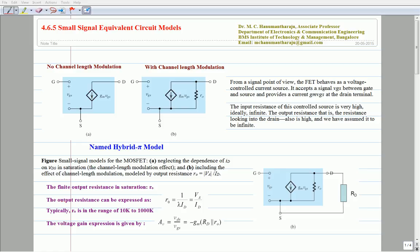The mathematical expression for R-naught is given by 1 over lambda times Id. Lambda is a channel length modulation parameter. 1 over lambda can be replaced with Va called as early voltage. Therefore, R-naught equals Va by Id.